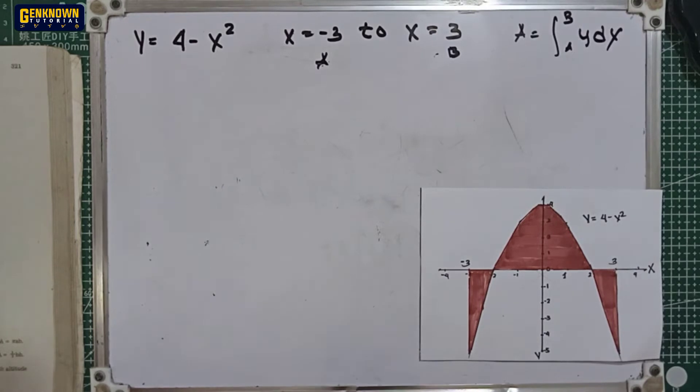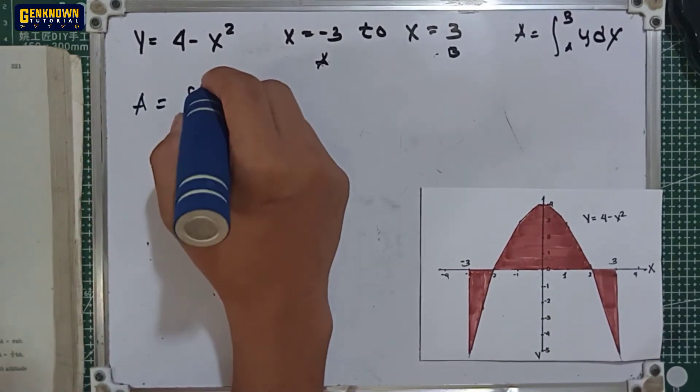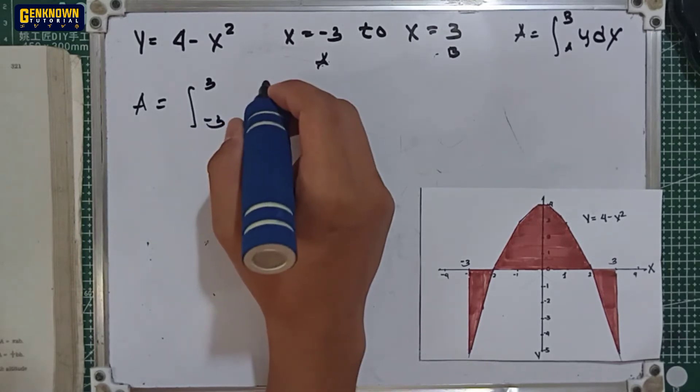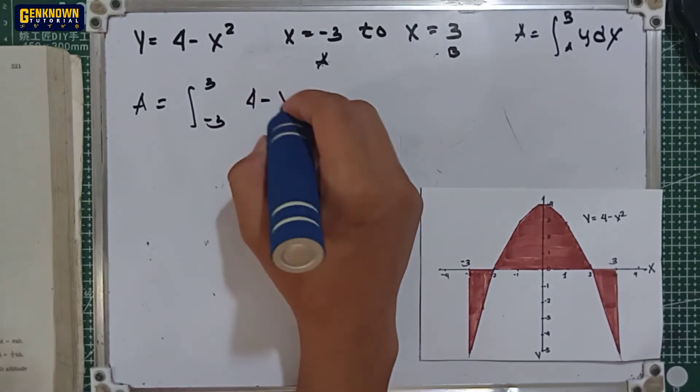Yung area is equal to the integral of positive 3, the upper limit positive 3 and lower limit negative 3, y is equal to 4 minus x squared dx.